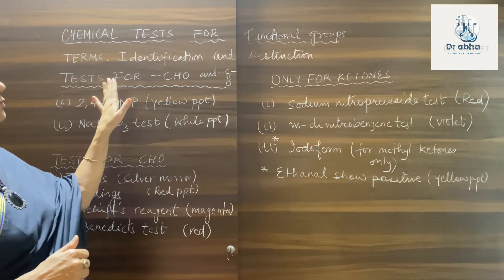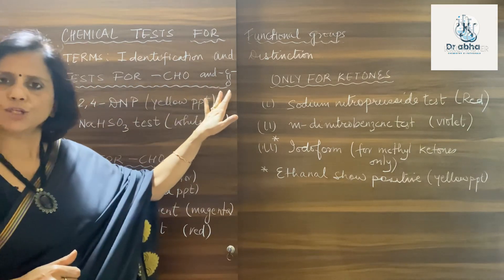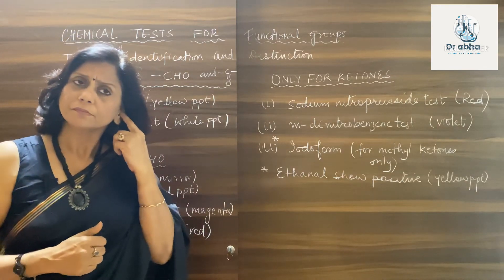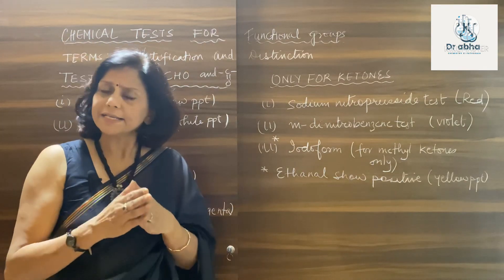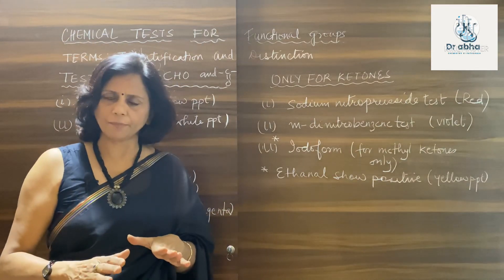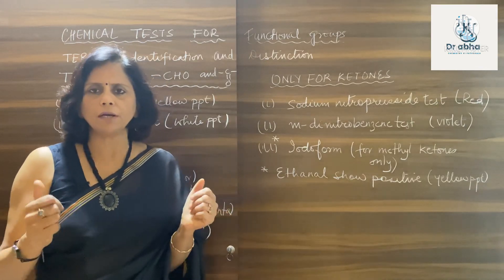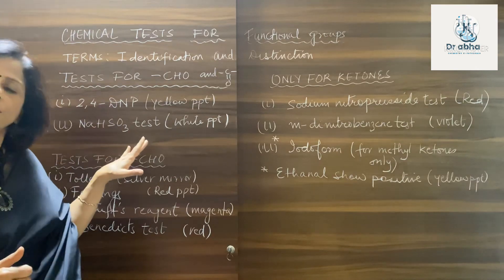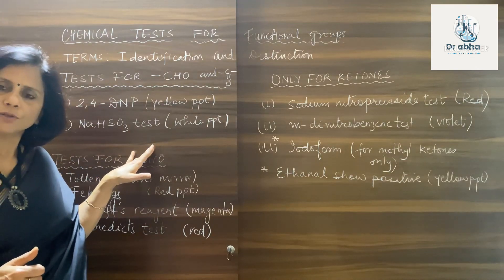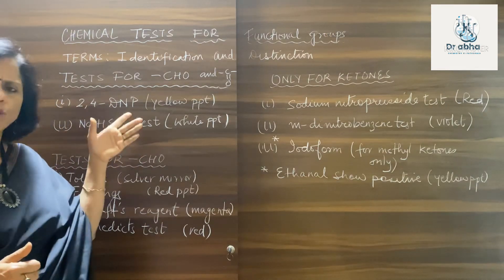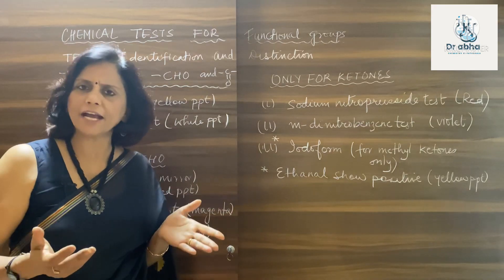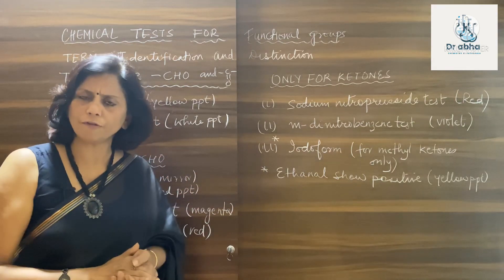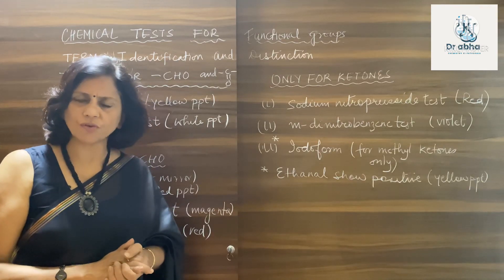Let's start with tests for the aldehyde and ketone functional groups. Certain tests are positive for both, since both contain the carbonyl functional group. First is the 2,4-DNP test — 2,4-dinitrophenylhydrazine — which gives a yellow precipitate for all kinds of aldehydes and ketones. Second is the sodium bisulphite test.